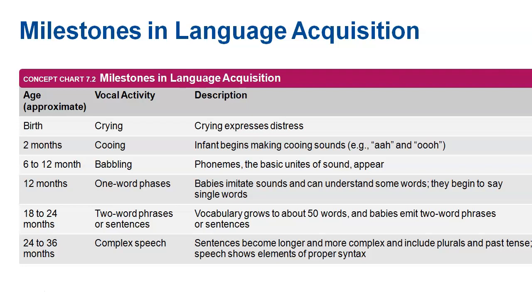Around 12 months you get one-word phrases; 18 to 24 months, two-word phrases; and then 24 to 36 months, on average, more complex sentences. Those are just the milestones to know.